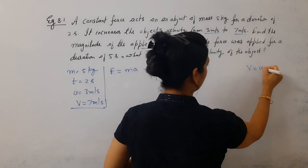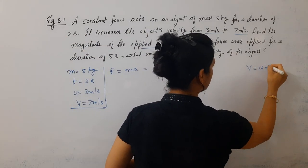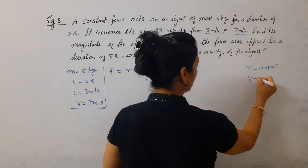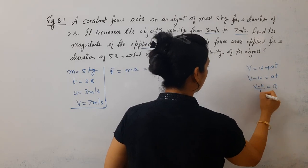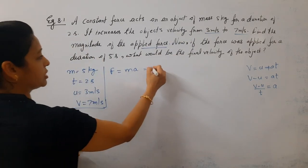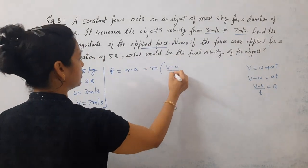First equation of motion is V equal to U plus AT. From here, V minus U equal to AT. So acceleration will be V minus U upon T. We will put acceleration as V minus U upon T directly.